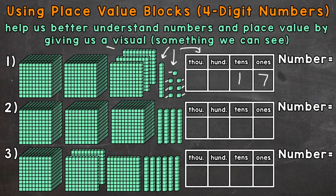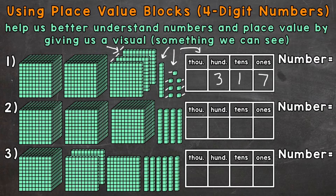Next, we have some squares right here, and each of those represents 100 — there are 100 place value blocks in each of those squares. We have one, two, and three of them. So three groups of 100, which has a value of 300, and we represent that by putting a three in the hundreds place. And then lastly, we have two cubes, which are groups of 1000 — we have two of them. So two groups of 1000 has a value of 2000, and we can represent that by putting a two in the thousands place.